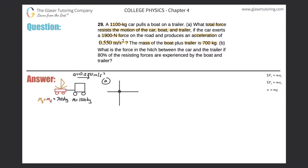The car produces a force of 1900 newtons on the road. Don't draw that vector pointing backwards — the wheels push back on the road, but I'm interested in the forces on the system. By Newton's third law, the road pushes back on the car in the equal and opposite direction. So the road exerts 1900 newtons on the system pointing to the right.